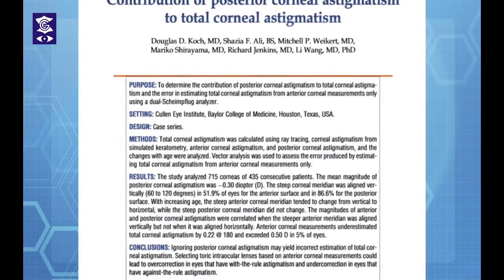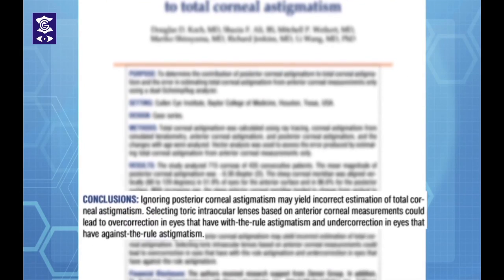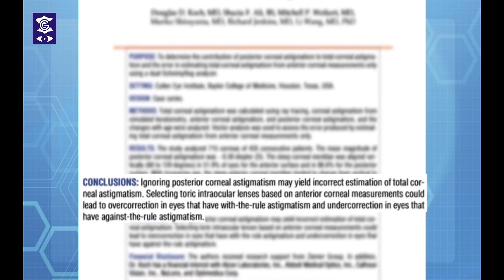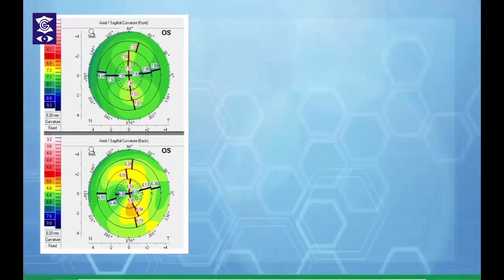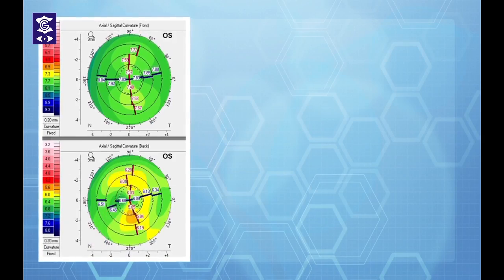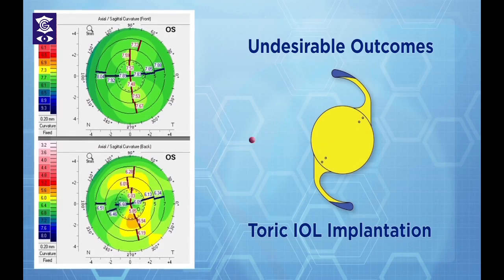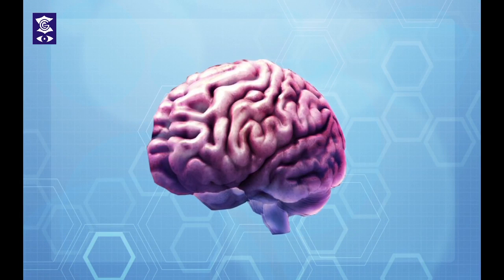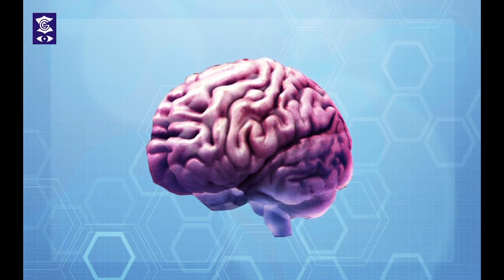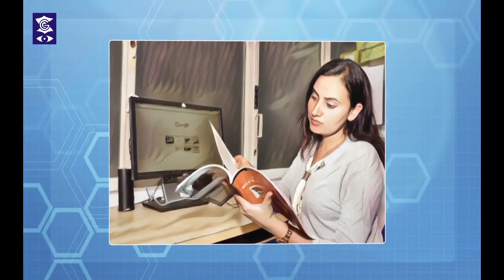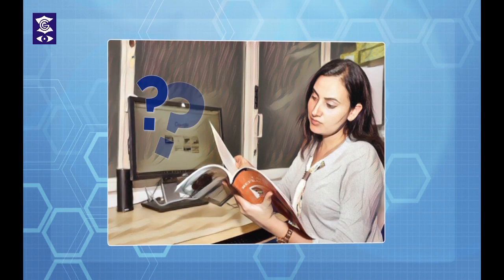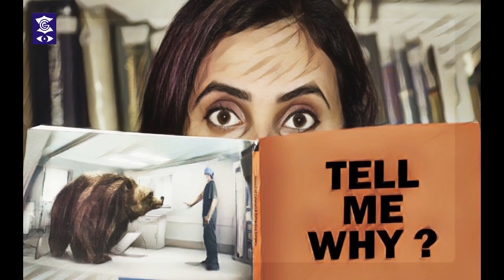Recent research has shown that the posterior surface of the cornea may have a significant contribution to total corneal astigmatism, and if not considered while planning, may result in undesirable outcomes following toric IOL implantation. However, there appear to be some lacunae in our understanding of this concept, and hence in this video we try to find explanations to some questions about posterior corneal astigmatism which I was unable to find in any of the 'Tell Me Why' books.